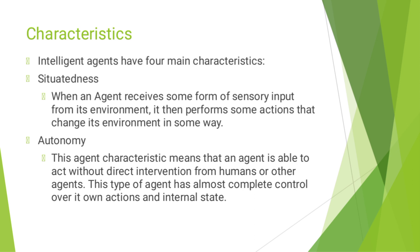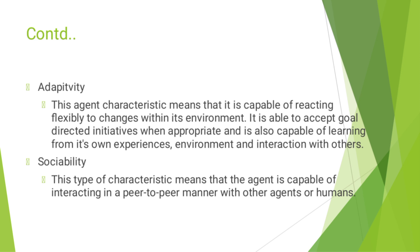An intelligent agent has four main types of characteristics. First is situated: when an agent receives sensory input from its environment, it performs actions that change its environment in some way. Second is autonomy: this means the agent is able to act without direct intervention from humans or other agents, and has almost complete control over its own actions and internal state.